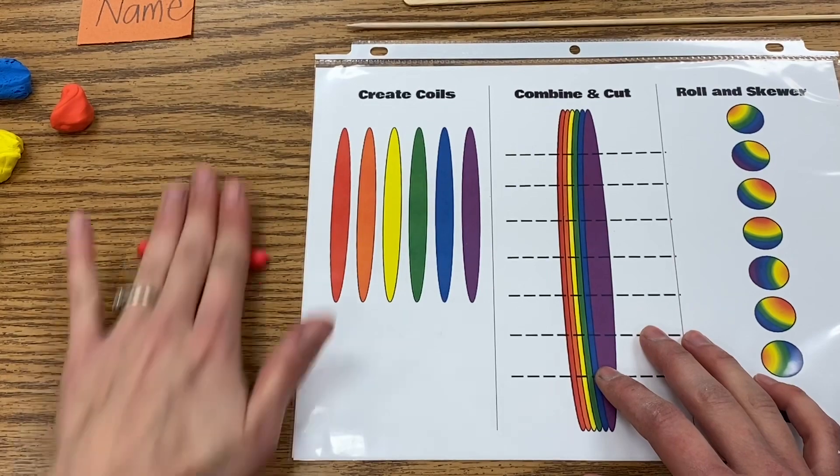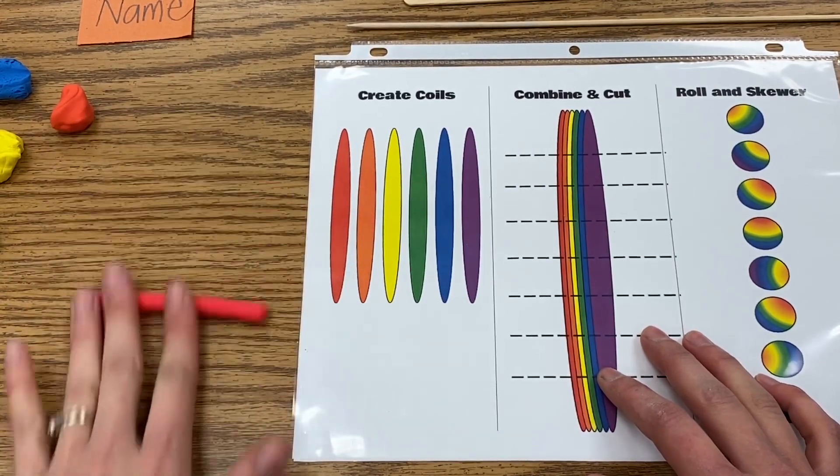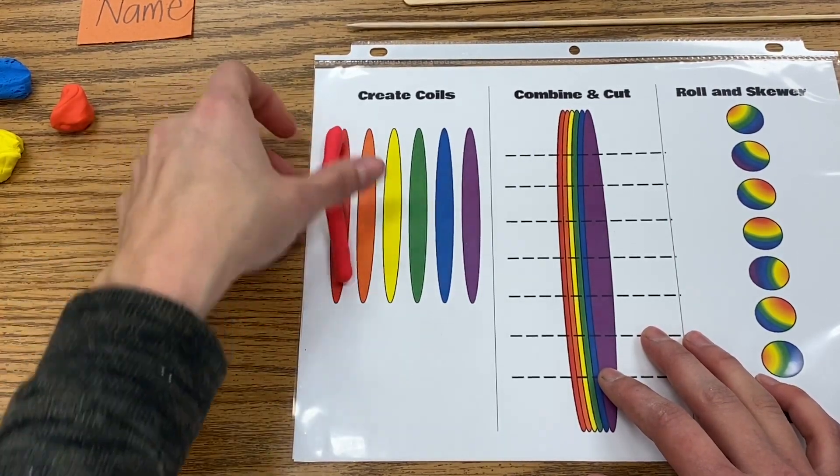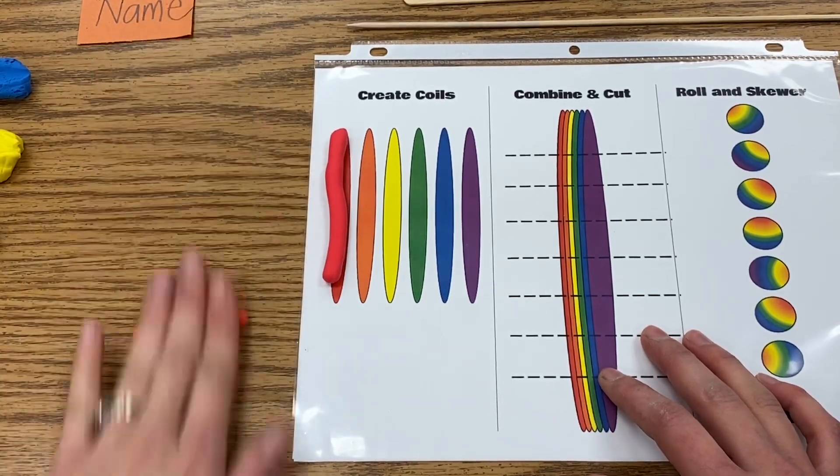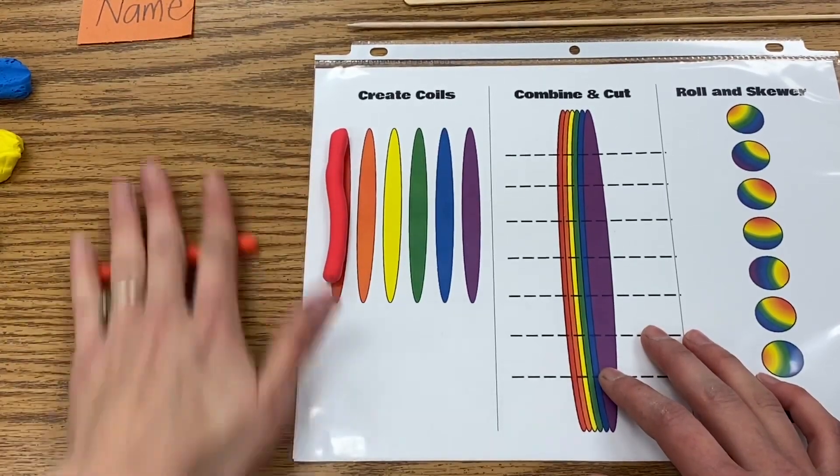So you're going to take your clay or your model magic and you're just going to roll it, kind of like you're making a little snake, and it needs to be about the length of what you see here.